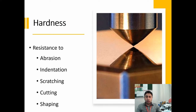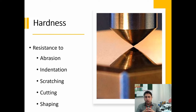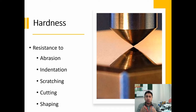Hardness is the resistance to abrasion, indentation, scratching, cutting, or shape change. This is the property of the material which tells us how much the material is resistant to scratching or indentation. If you can scratch a material easily, it means it is not a hard material. If you cannot scratch it easily, it means it is a hard material.